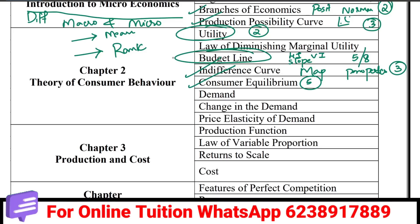If you look at the consumer equilibrium — what is the budget line, what is the indifference curve, what is the consumer equilibrium — and then demand, where the demand and the price elasticity of demand are covered.